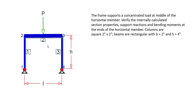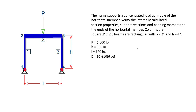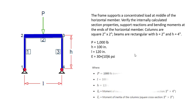We need to verify the geometrical properties. We have the specifications in the form of column properties which are having the size of 2 by 2 inch. Similarly, we have a beam with a width of 2 inch and depth of 4 inch. So if we summarize the data, whatever information we have, based on that we can work out the manual validation first.